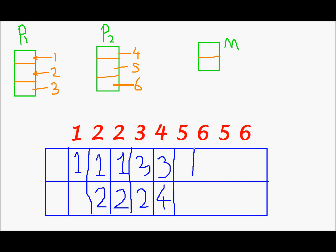Next I need page 5, so I'll have to remove one of these. Let's say I remove page 3 and place page 5 in place of 3, while page 4 remains where it was. Next I need page 6, so I'll remove again one of these. Let's say I remove 5 and place 6 in place of 5, while 4 remains where it was.